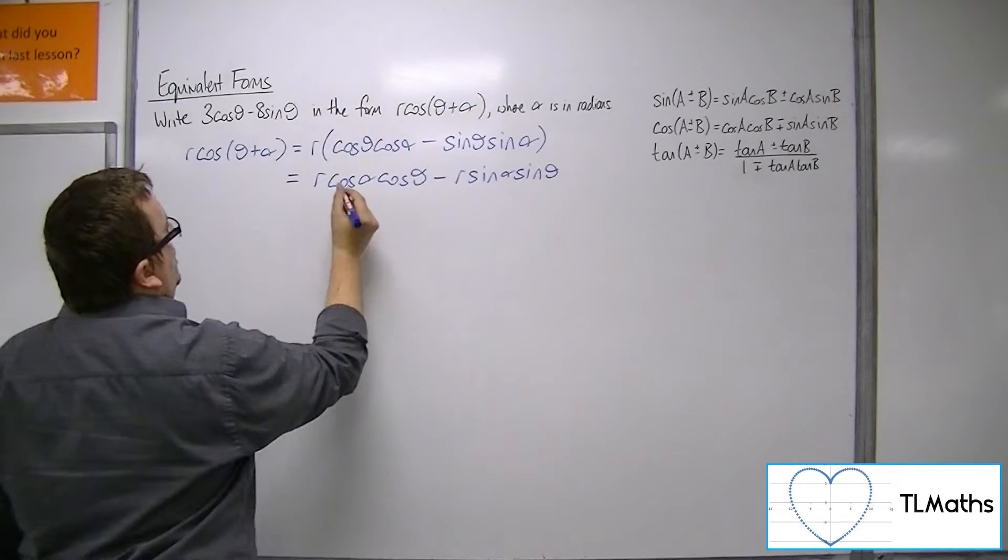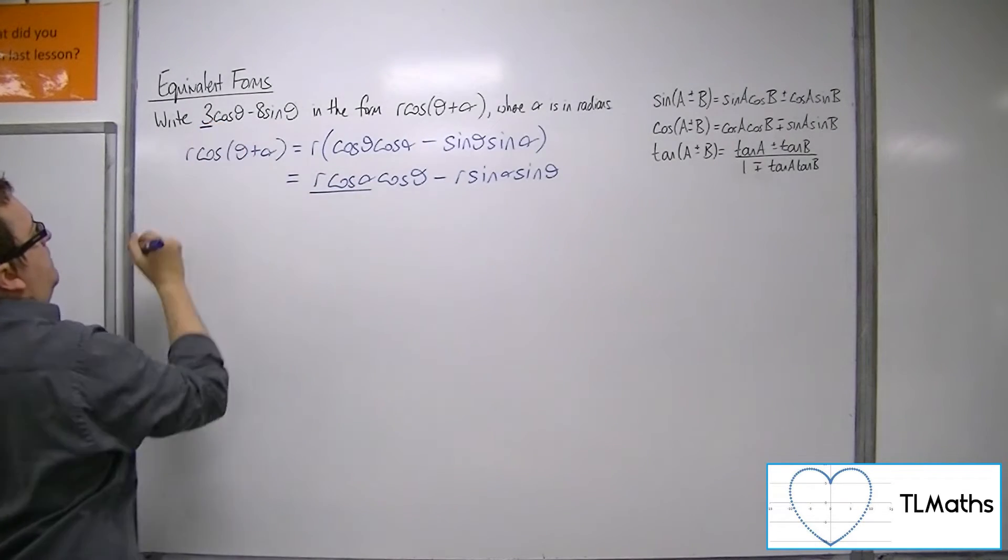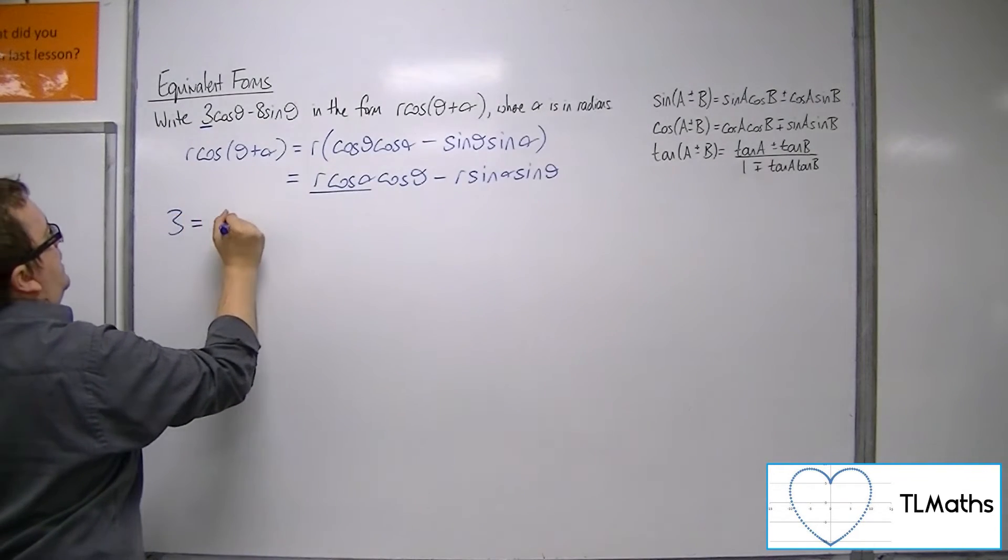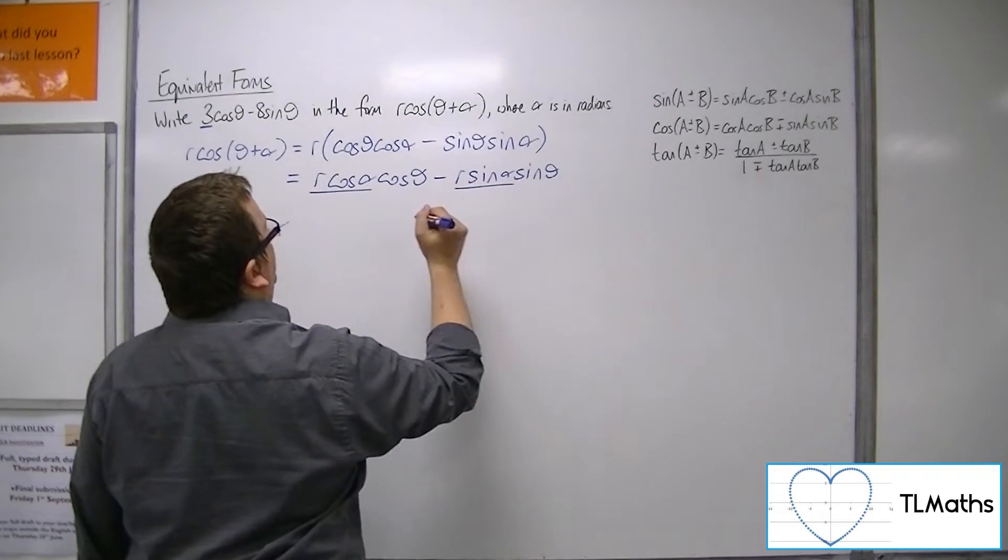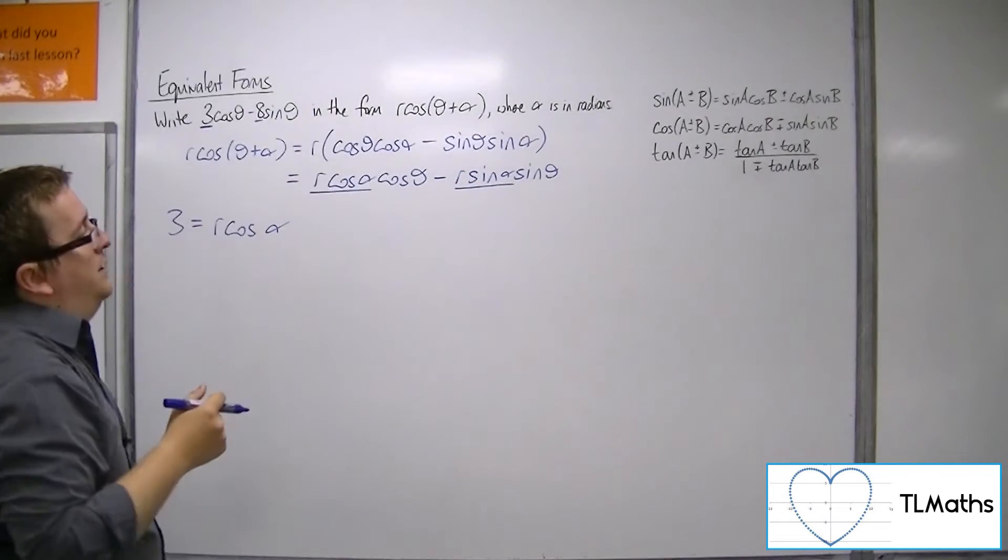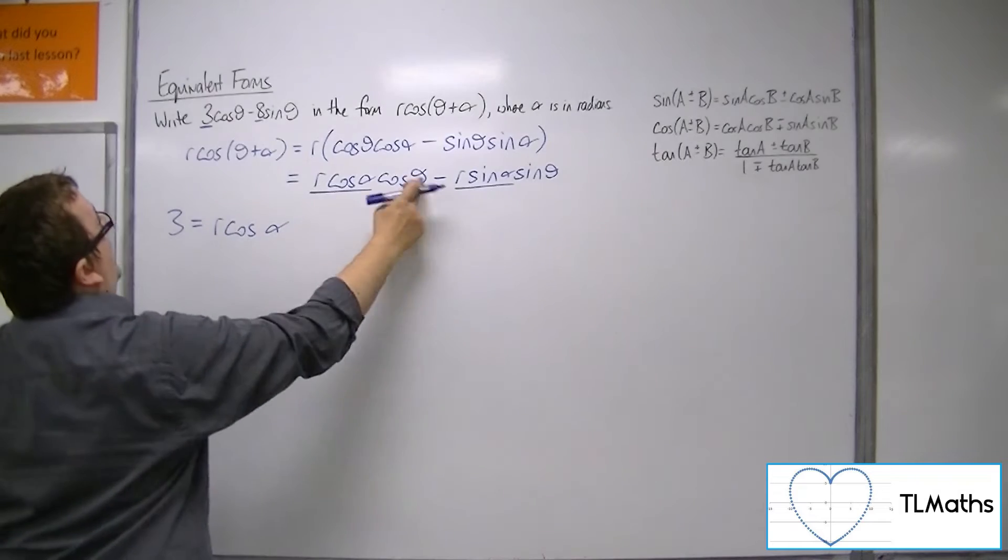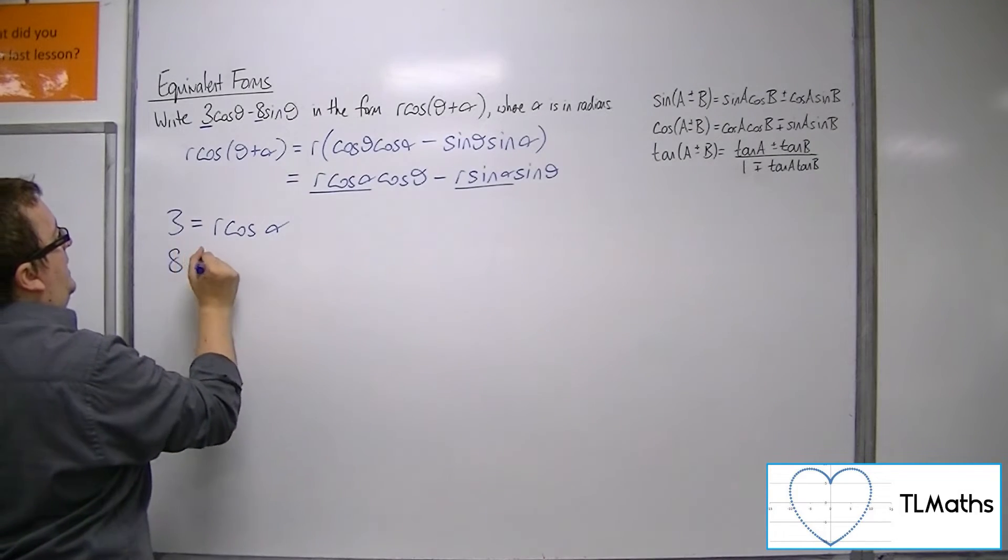So if one is in front of the cosines are the same, we would have that 3 is r cos alpha and r sin alpha must be the 8. We've got a minus there and a minus there, so the r sin alpha must be 8.